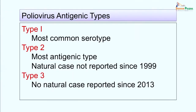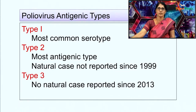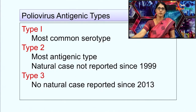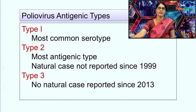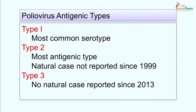On the basis of D antigen, poliovirus is classified into 3 types. Type 1 is the most common serotype and has been responsible for most epidemics of poliomyelitis. Naturally occurring poliomyelitis at present is caused by type 1. Type 2 is the most antigenic type and no natural case of poliomyelitis due to type 2 has been reported since 1999. Type 3 has not been reported since 2013. At present, naturally occurring poliomyelitis cases are only due to type 1 poliovirus.